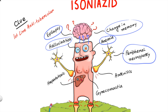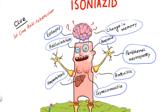The disoriented liver picture will remind you that the drug is hepatotoxic, the enlarged breast signifies gynecomastia, and lastly, the red inflamed joints will remind you of arthritis or shoulder-hand syndrome.